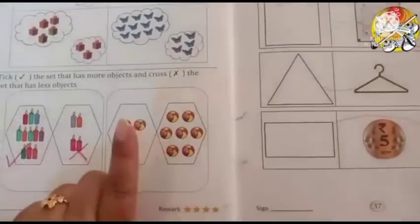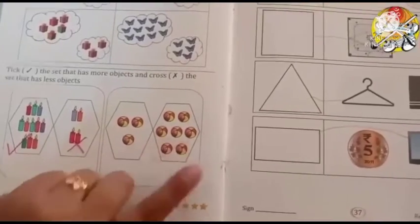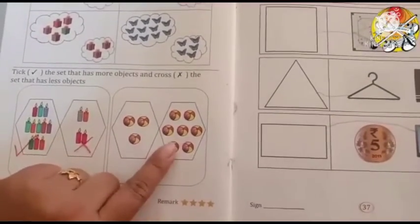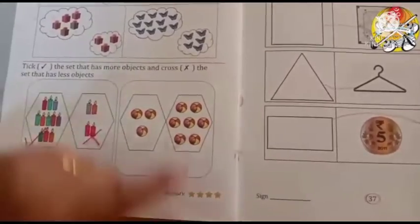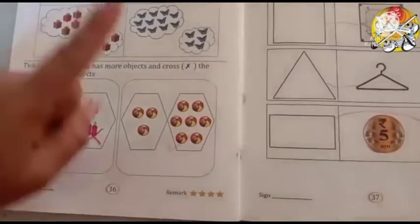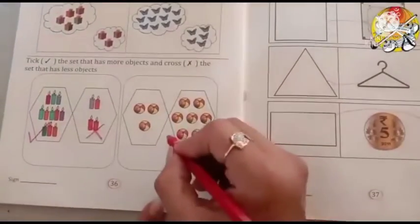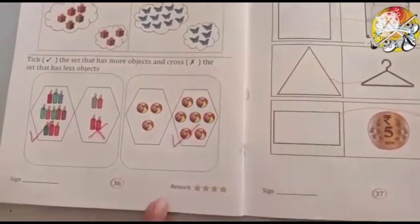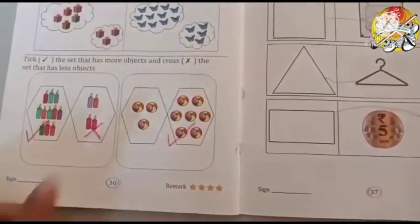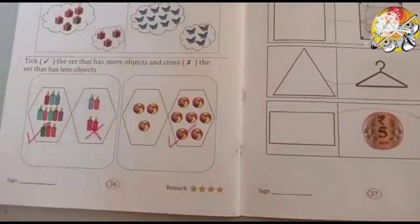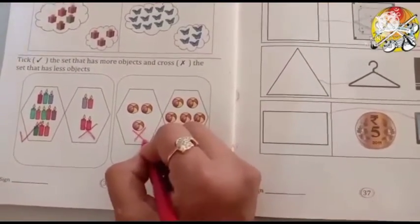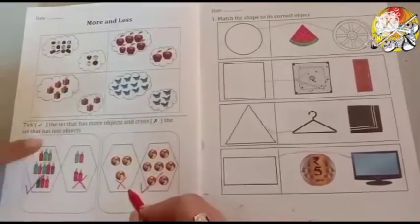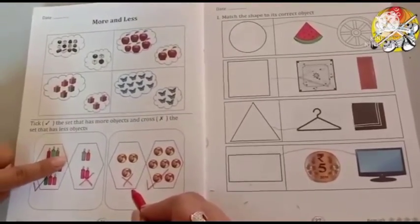In the next box, see, compare two boxes. In this box, less or more? Yes, in this box, more balls are there. So copy me, tick on this box like this, on more balls. And in this box, few balls are there. That is less, so cross on this box. Like this way, you also complete this activity in your book.